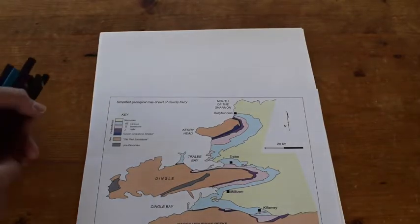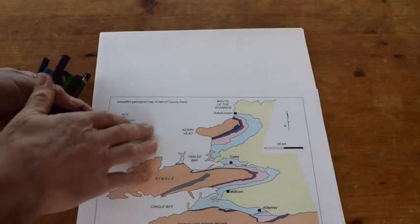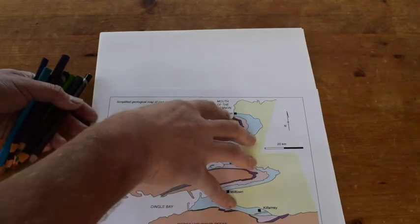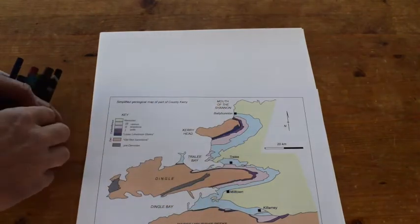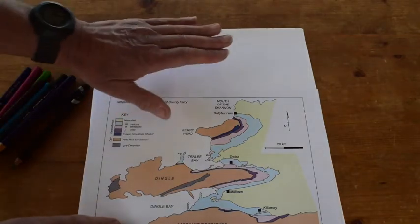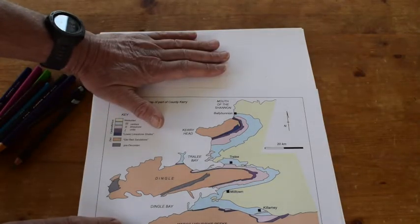So in this video we're going to look very quickly at a simple way of sketching a cross section through this map of the west of Ireland with a variety of coloured pencils and a simple pad of paper to get an idea of what's going on.